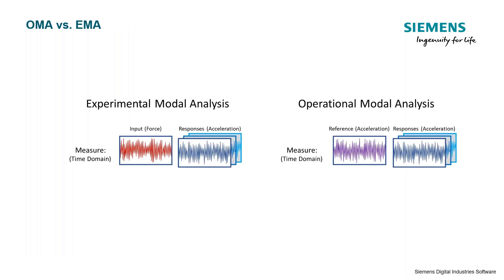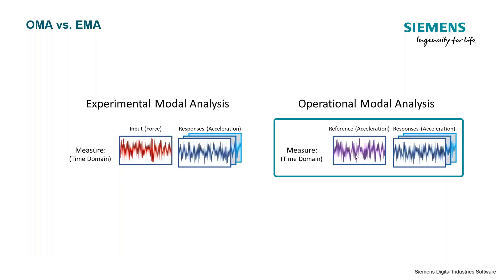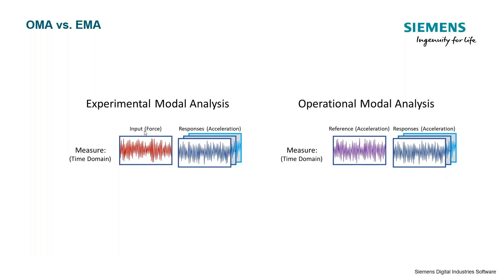Looking at the first step: we take data on our structure. In experimental modal, we measure in the time domain — we measure our input force in red and a bunch of response accelerations around our structure. In operational modal, we do the same thing but without a measured input force, so all we have is response accelerations. We still call one of our measurement locations our reference. In experimental modal, the input force is always our reference — the FRF is always acceleration over force. In operational modal, we designate one location as our reference and measure a bunch of other responses. Everything is acceleration time data in operational modal analysis.